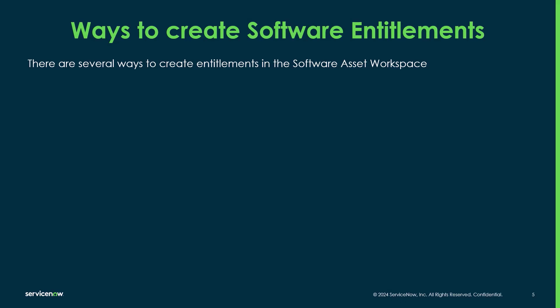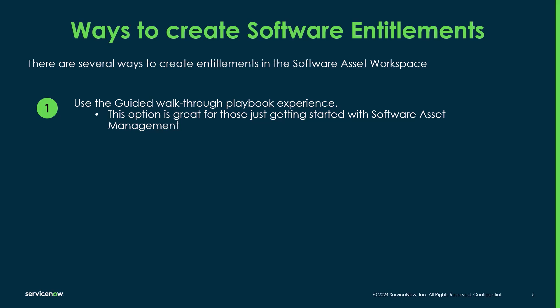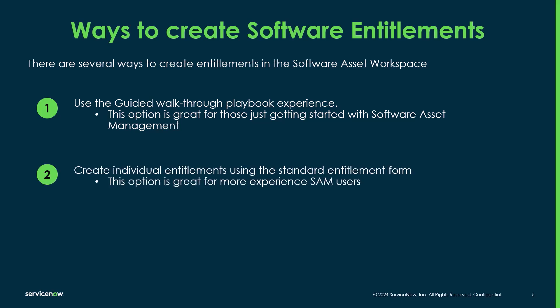There are several different ways to create entitlements in the software asset management workspace. The first is to use the guided walkthrough or the playbook experience. This option is really great for those just getting started with software asset management because it takes you step-by-step through all the required information to properly create a software entitlement. The next is to create individual entitlements using the standard entitlement form, which is great for more experienced SAM users who just want a quick form to enter.